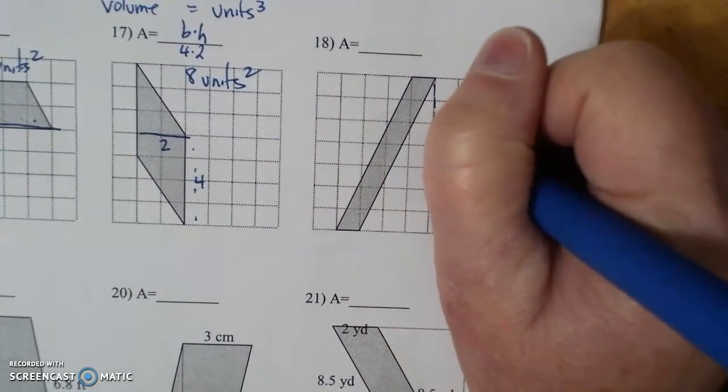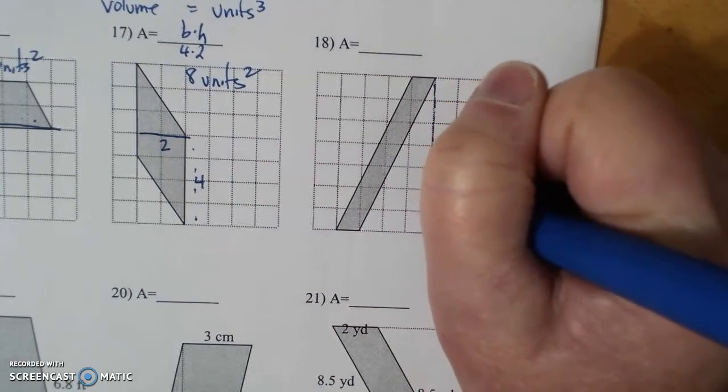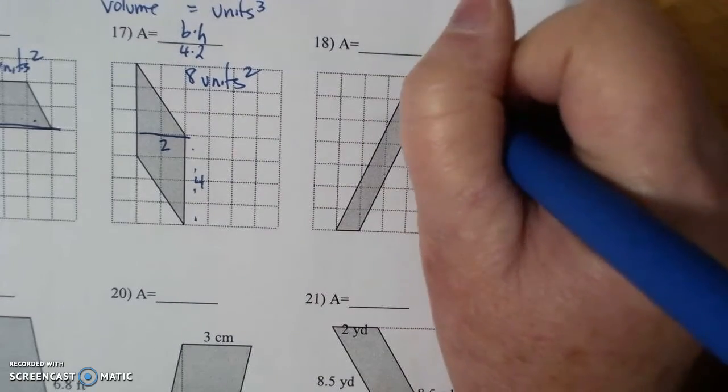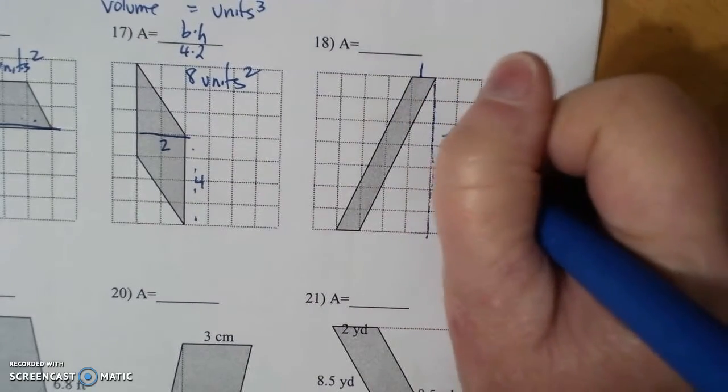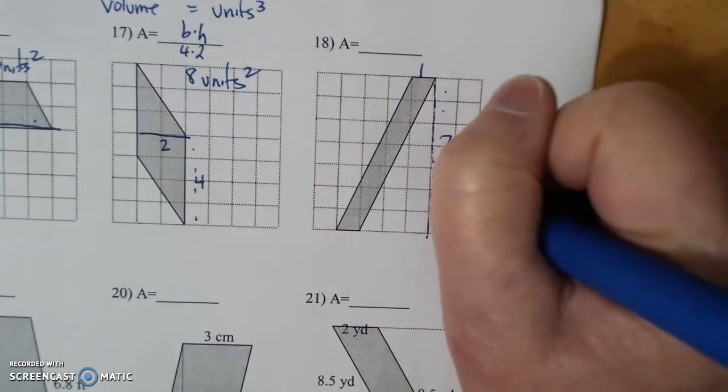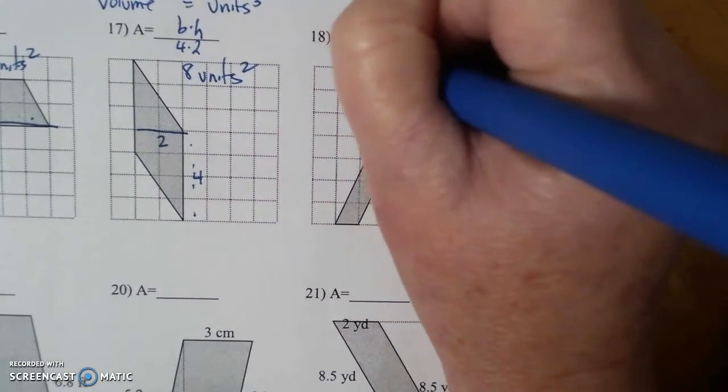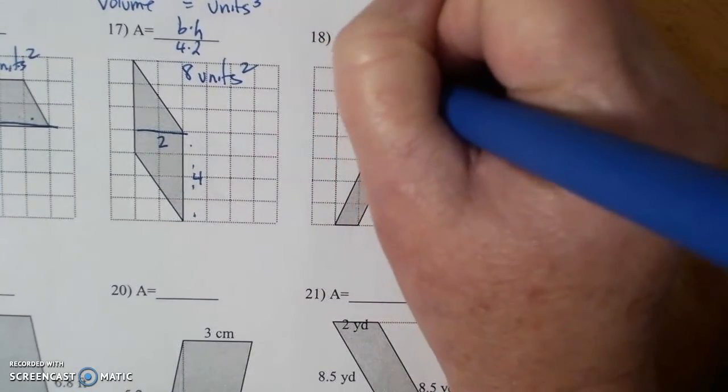And here, this is 1, 2, 3, 4, 5, 6, 7. This is the height. Base times height. 7 times 1, 7 units squared.